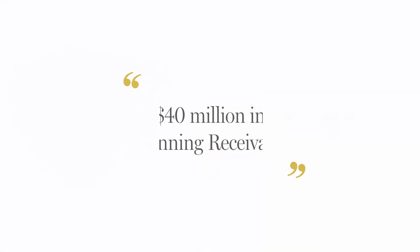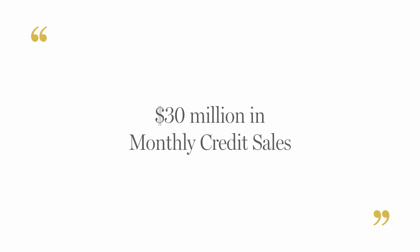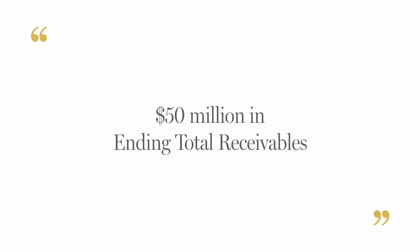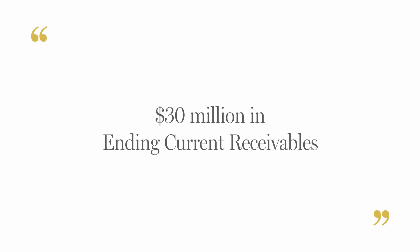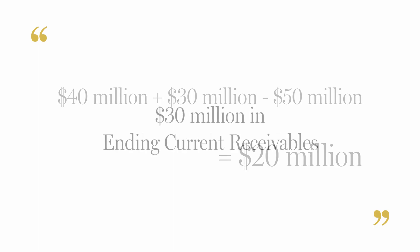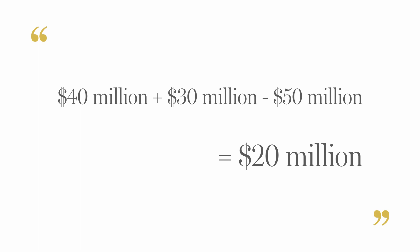Here's an example. Company A has 40 million in beginning receivables, 30 million in monthly credit sales, 50 million in ending total receivables, and 30 million in ending current receivables. First, you take beginning receivables — 40 million — add the monthly credit sales of 30 million, then subtract the ending total receivables of 50 million, and this gives you a total of 20 million dollars.